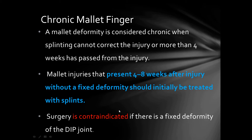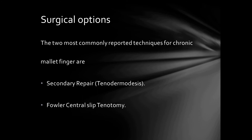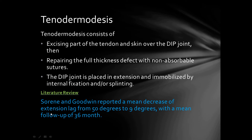Chronic mallet finger is considered when splinting cannot correct the injury or more than 4 weeks has passed from injury. Injuries presenting 4 to 8 weeks after injury without a fixed deformity should initially be treated with splinting. Surgery is contraindicated if there is a fixed deformity of the distal interphalangeal joint. The two most commonly used surgical options are tenodermodesis and Fowler central slip tenotomy.